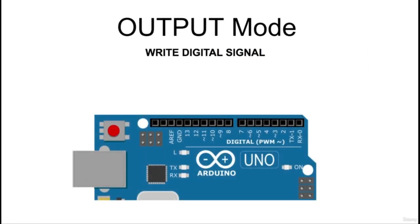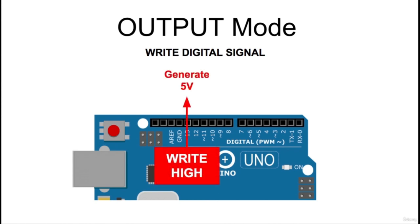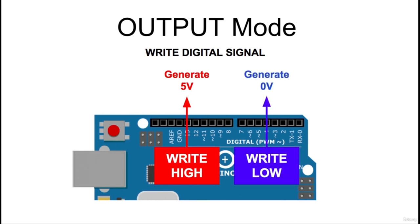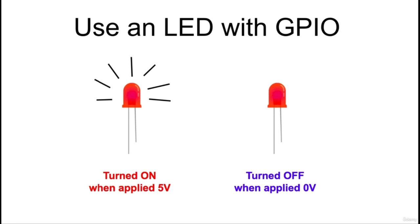When a digital pin is configured as output, we can use it to generate a high or low state — 5V or 0V respectively — to interact with other electronic components. If we write a high state to a pin, it will generate 5V, and if we write a low state, it will generate 0V. A very common task is to drive an LED, which will emit light each time a current flows through it. Connecting an LED to a digital pin and writing a high state will turn it on, while writing a low state will turn it off.